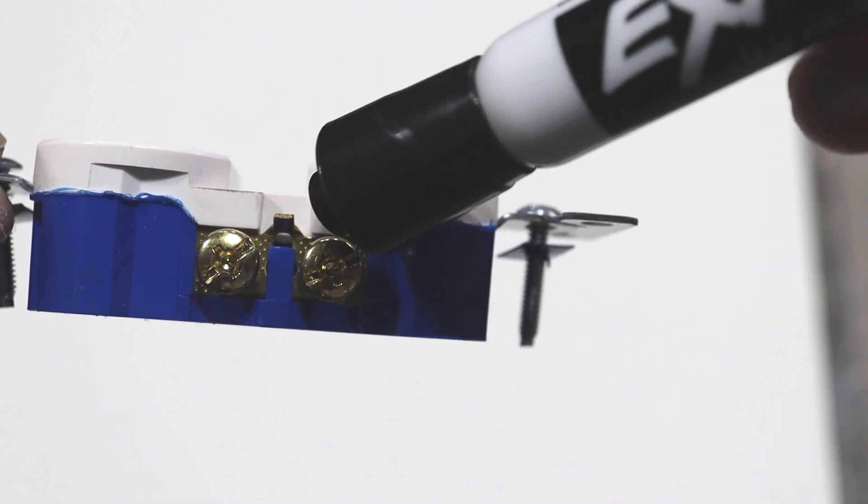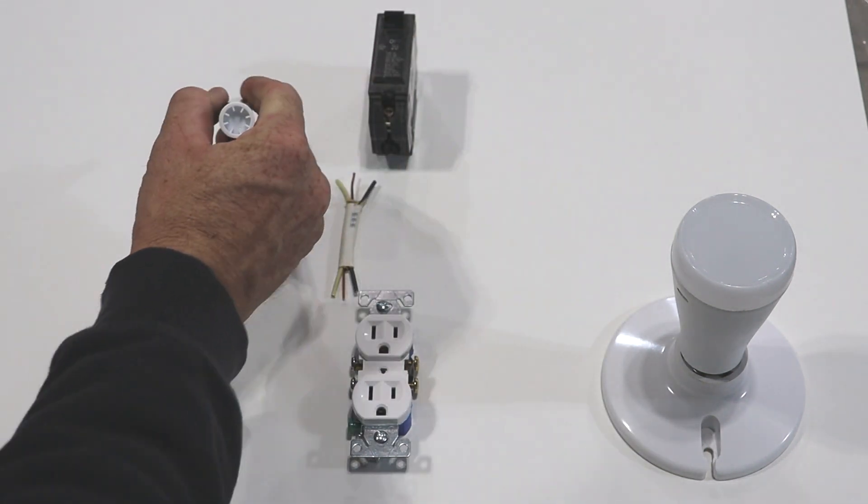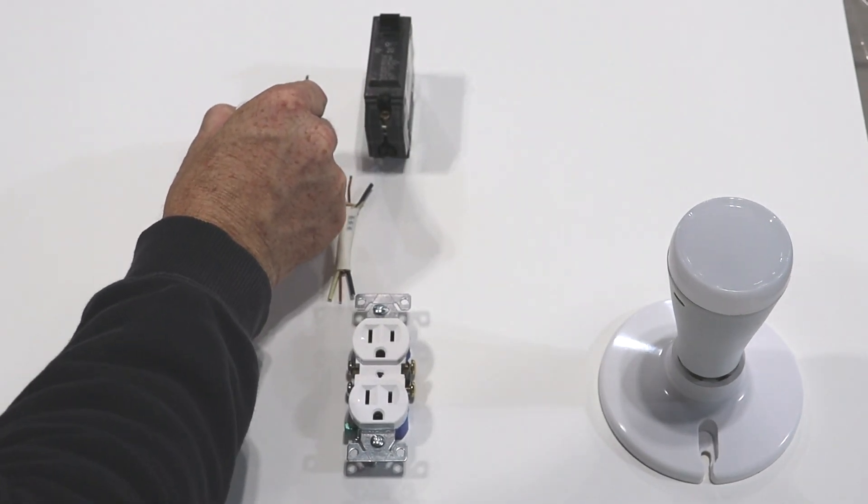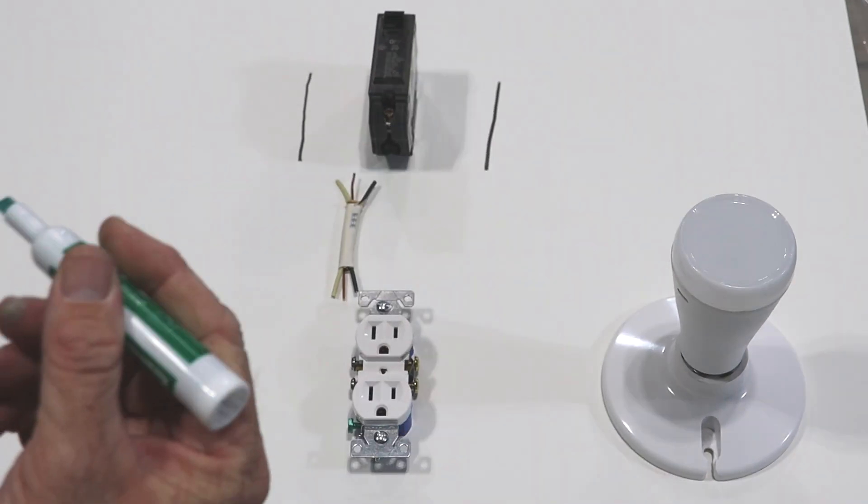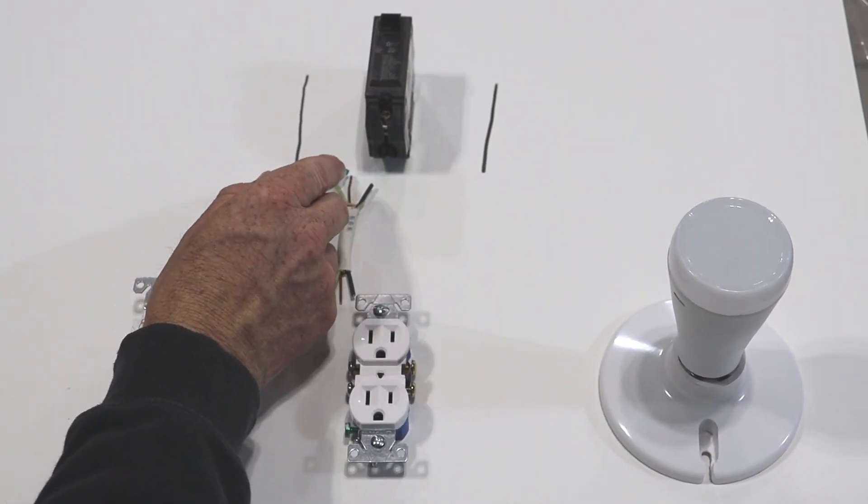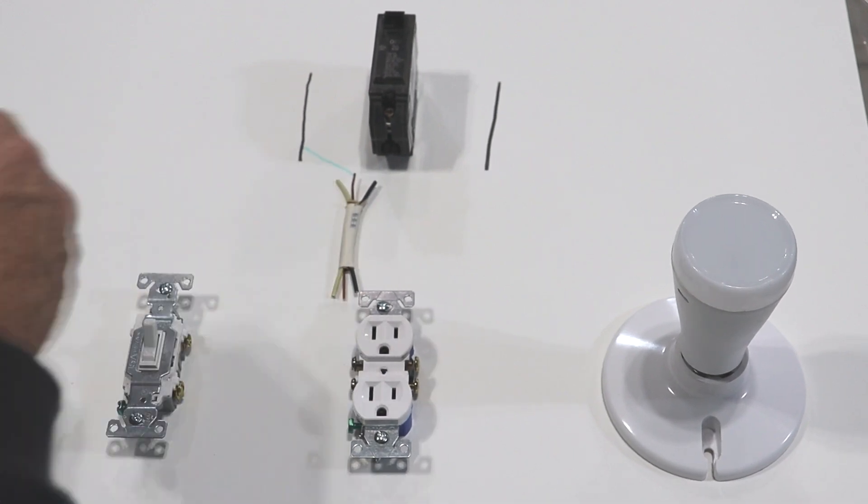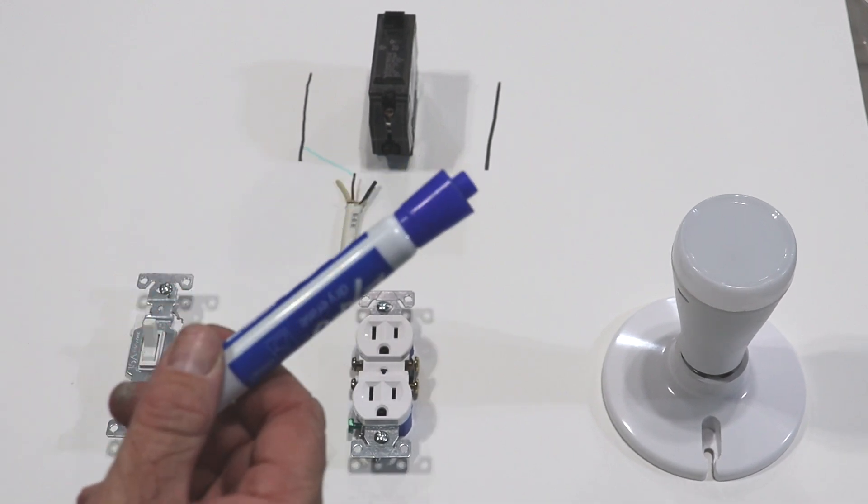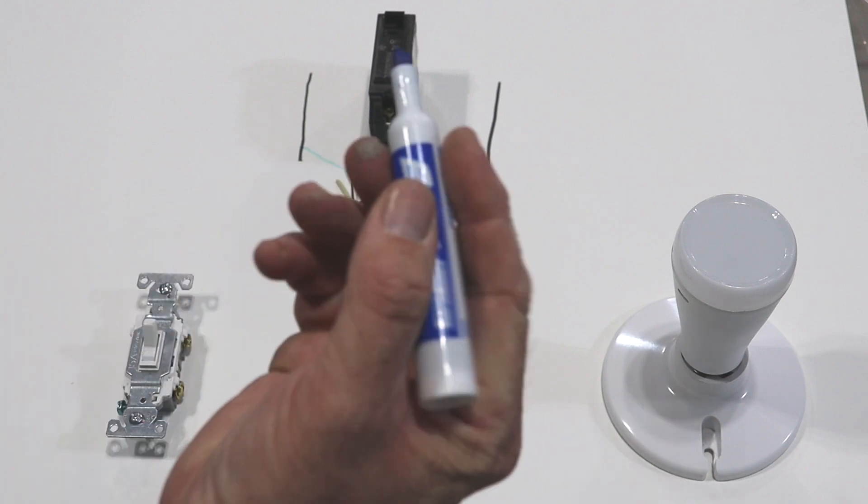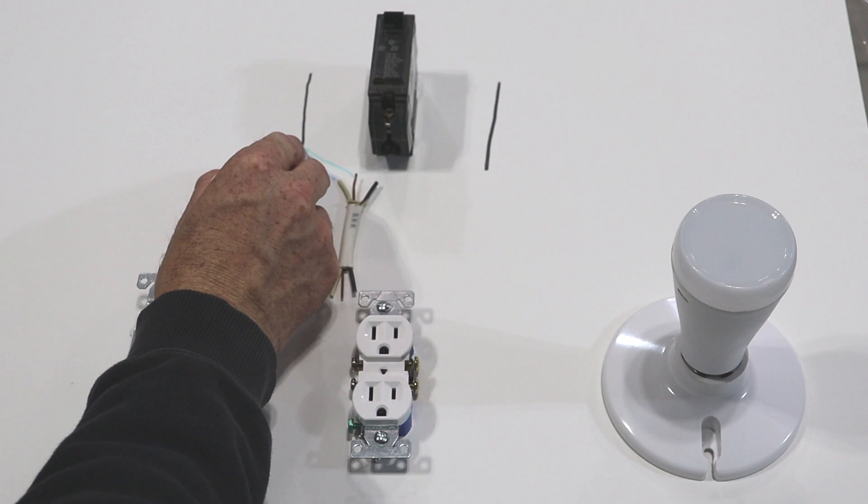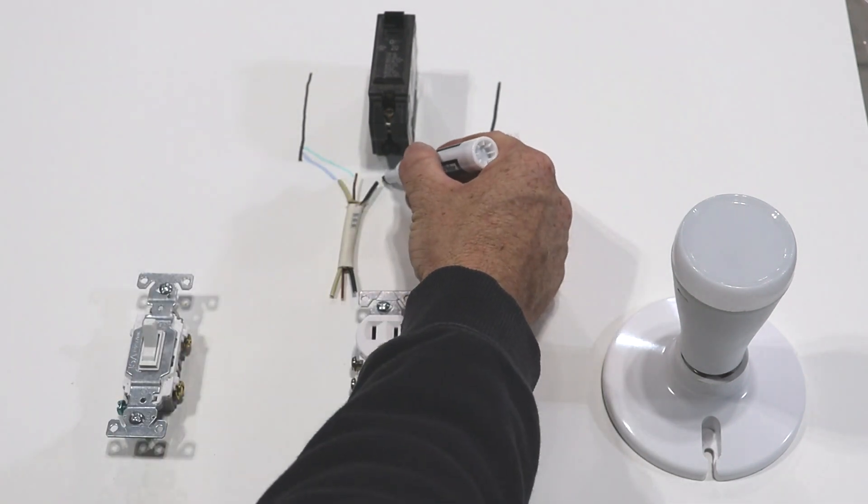So in your panel box you're going to have all of your breakers in the middle and then you're going to have bus bars along the side. So the bus bars are where you're going to connect your ground wires and your white neutral wires. Of course this is a piece of poster board so I'm going to use blue for my neutral wire. And then your black wire is going to hook up to your breaker.